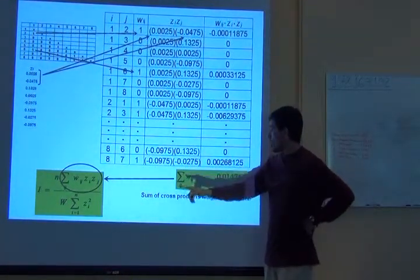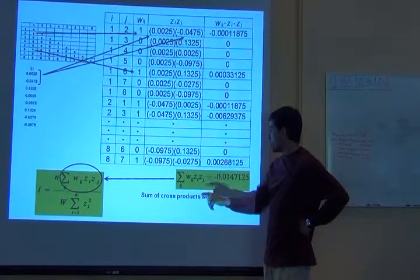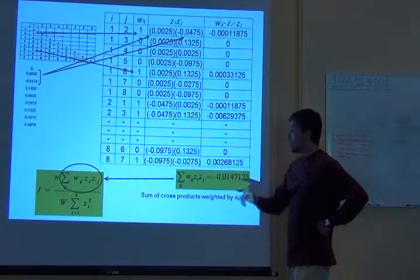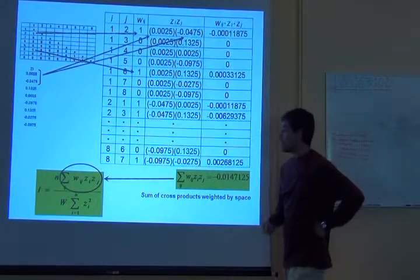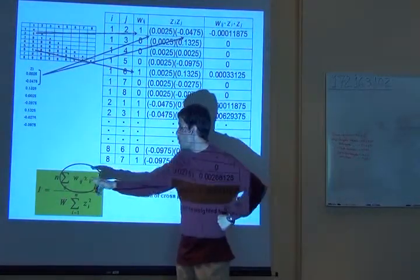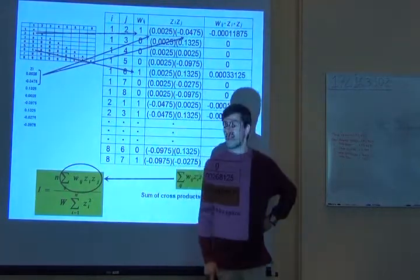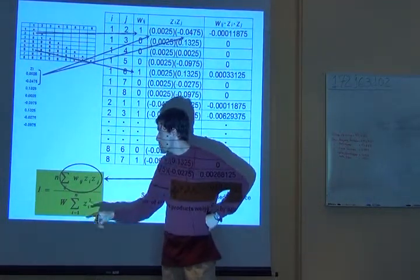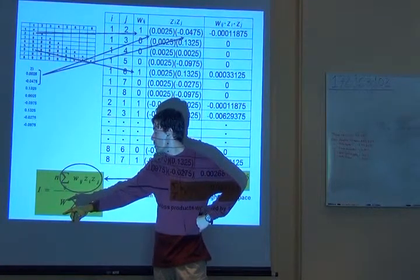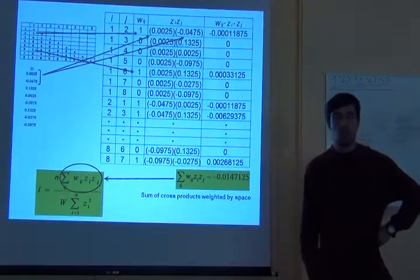So, the sum of wij zi zj is this number here, which happens to be negative. And this number over here comes directly to this place. We already know this. Now we just need to figure out what is n and what is this W uppercase.